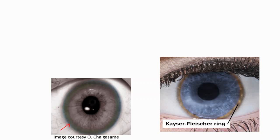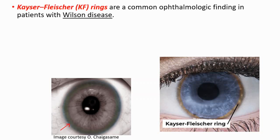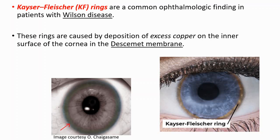In this video we're going to talk about Kaiser-Fleischer rings. Kaiser-Fleischer rings are a common ophthalmologic finding in patients with Wilson disease. Wilson disease is caused by impaired excretion of copper. These rings are caused by deposition of excess copper on the inner surface of the cornea in the Descemet membrane.